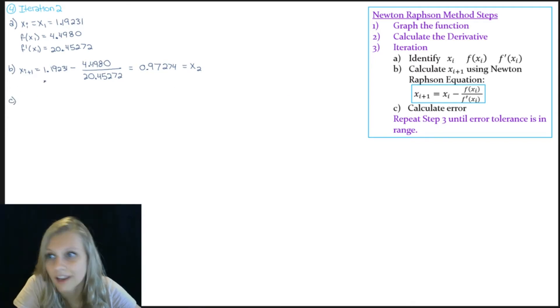So then the last thing we need to do is calculate our error. So our current guess is 0.97274. And our previous guess this time is the estimate value that we got from our first iteration. So that's the 1.19231 value. And that gives us an error of 22.6%, which is less than the previous error, but it's still greater than 10%. So we will need to perform a third iteration.